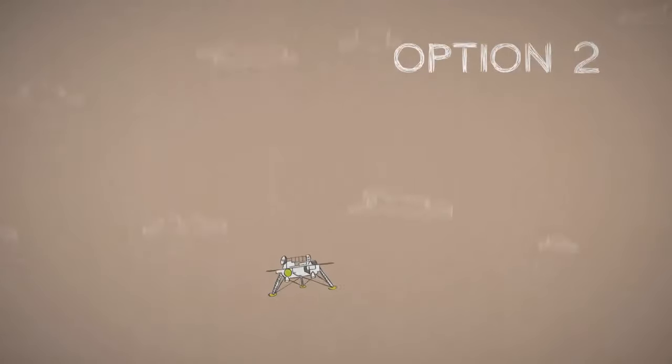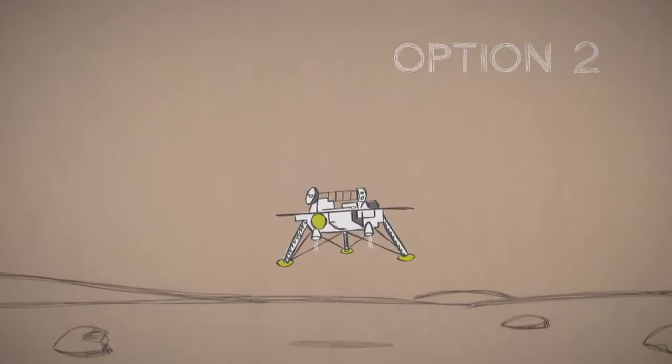With a large lander, use retro rockets and landing legs to touch down going about 6 miles an hour.